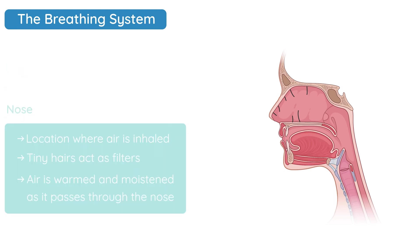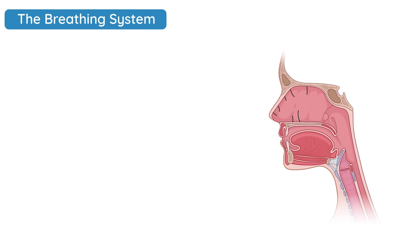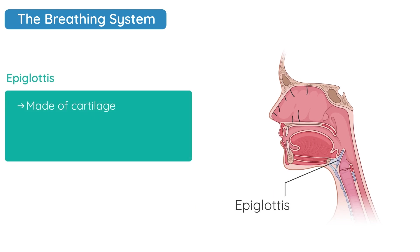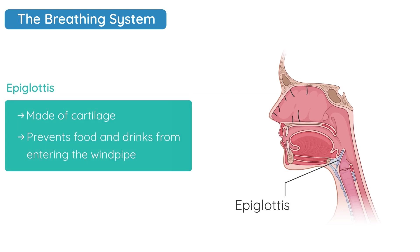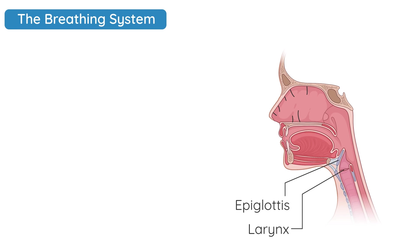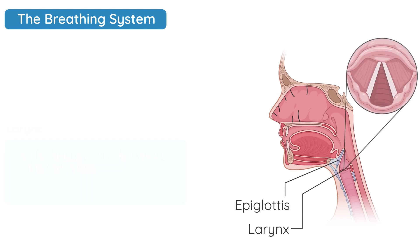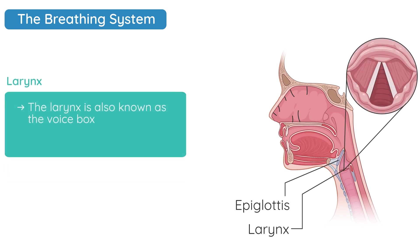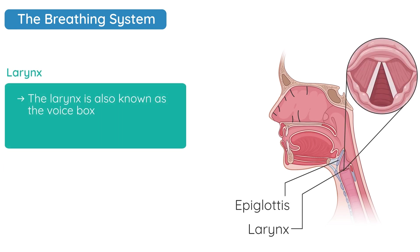At the top of the windpipe we have a very important structure called the epiglottis. It's made of cartilage and its role is to prevent food and drinks from entering the windpipe. The larynx lies at the very top of the windpipe and is better known as the voice box. It contains two vocal cords, and when we speak we pass air through those vocal cords, which produces sound.